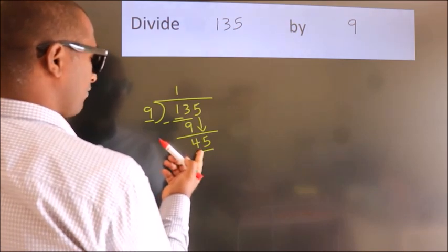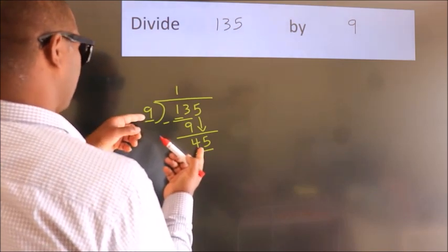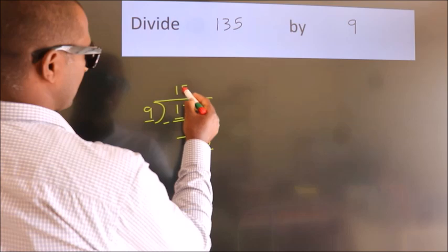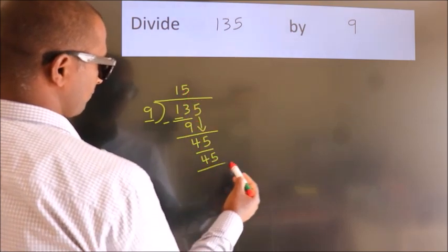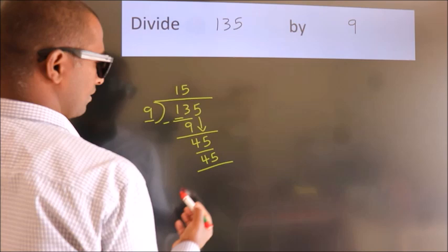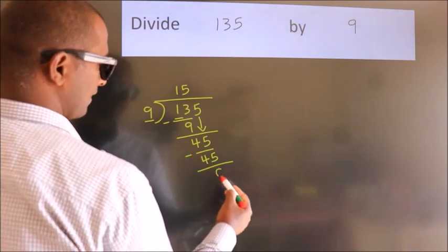When do we get 45 in the 9 table? 9 fives, 45. Now we subtract. We get 0.